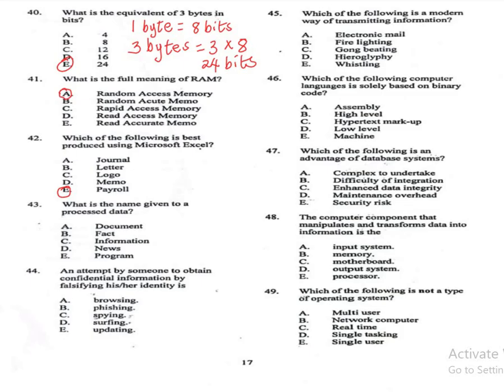A spreadsheet is best for creating and managing numerical data like payrolls. Question 43: What is the name given to processed data? A: document, B: fact, C: information, D: news, E: program. The correct answer is C, information — once data is processed it becomes information. Question 44: An attempt by someone to obtain confidential information by falsifying their identity is — A: browsing, B: phishing, C: spying, D: surfing, E: updating. The correct answer is B, phishing. Phishing involves pretending to be someone trustworthy to steal sensitive data.